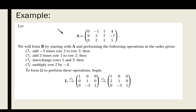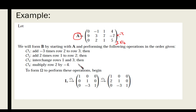Let's have an example. Let A be this 3×4 matrix. We will form B by performing the following four operations in order: first, add −3 times row 2 to row 3; second, add 2 times row 1 to row 2; third, interchange rows 1 and 3; fourth, multiply row 2 by −4. We will show that performing these on the identity matrix gives Ω.